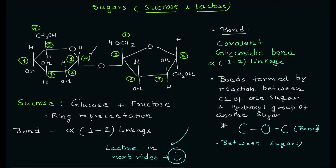I'll come with the next video where we'll discuss the structure of lactose. I hope this video was helpful to understand the glycosidic linkage — why it's called alpha 1-2, because carbons one and two are involved in the linkage. The basic units for sucrose are glucose and fructose. I hope this helps you understand carbohydrate biochemistry better. I'll meet you in the next video — thank you and take care.